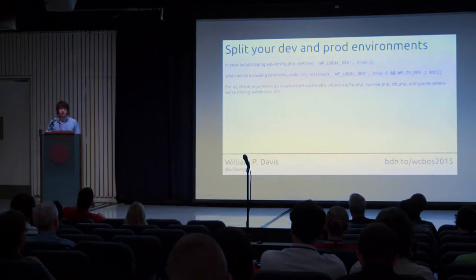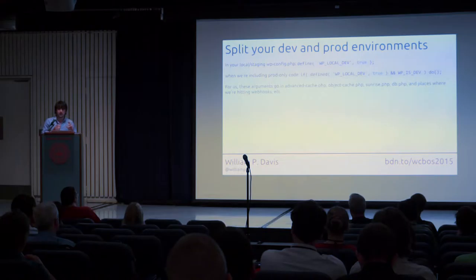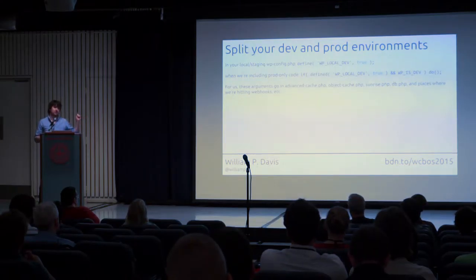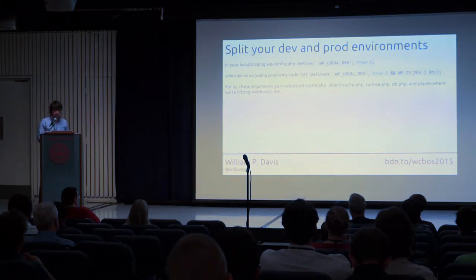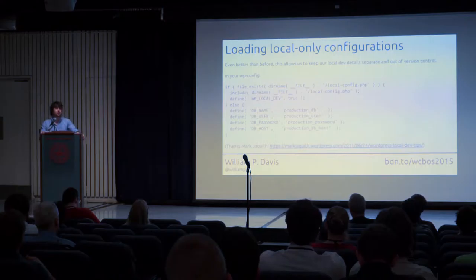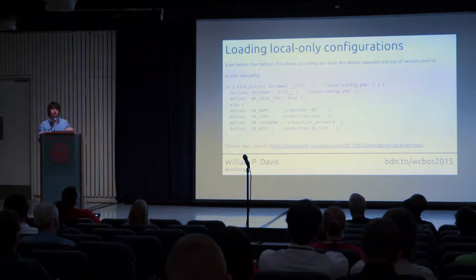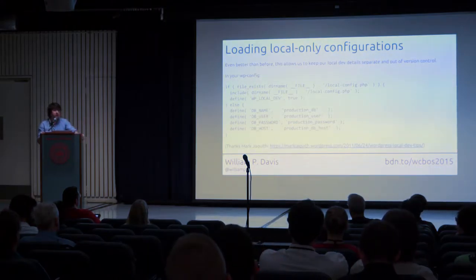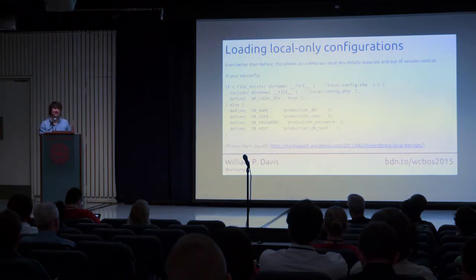The way we've worked around that is to define something very early on in your wp-config: just say this is a local dev environment. In your code you can say if we're developing locally, do or don't do this thing. For example, object-cache.php is a drop-in you put in your wp-content directory that loads your persistent object cache. We say in object-cache.php: is this the dev environment? If it is, don't load the object cache. You can get even more complicated — what Mark Jaquith recommends is having a local-config.php file. If your wp-config is in version control, you don't want to accidentally commit local-only variables to production.